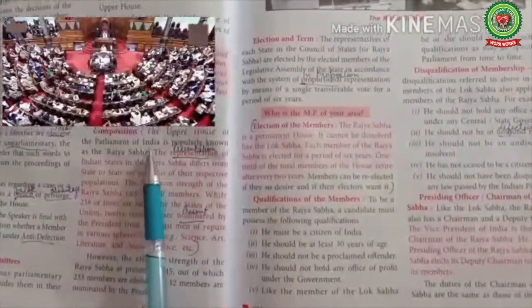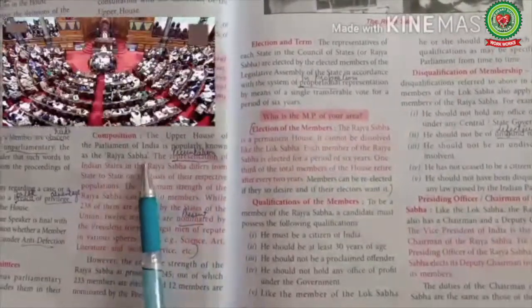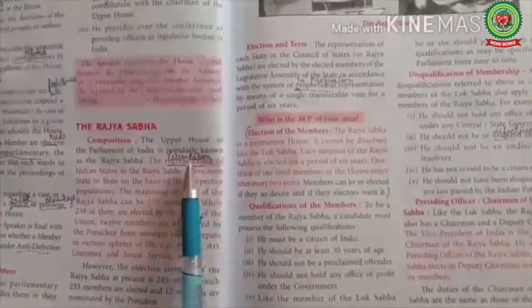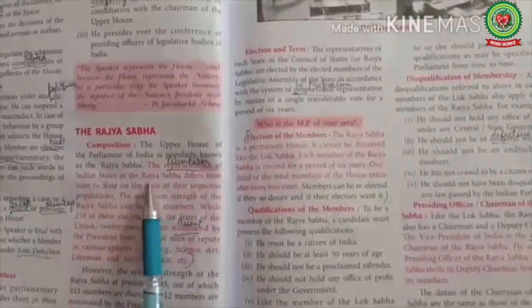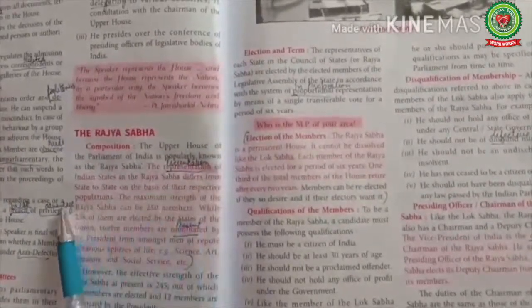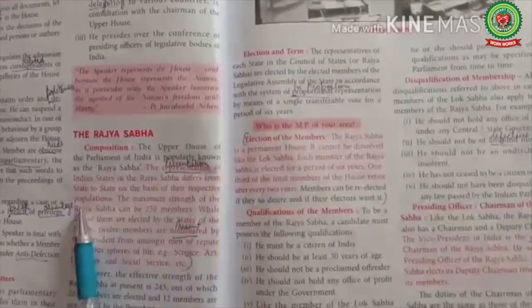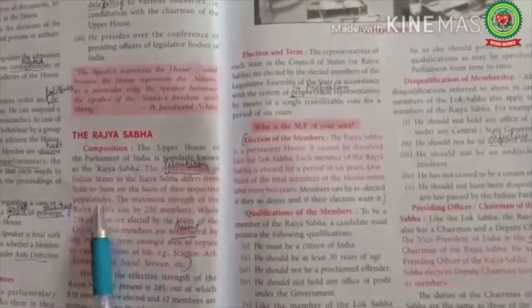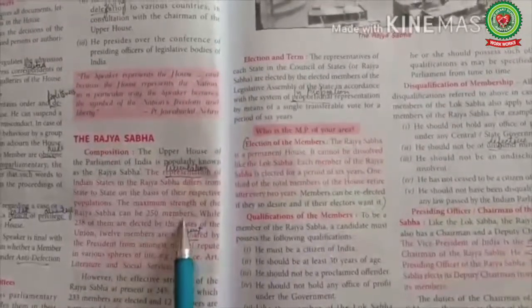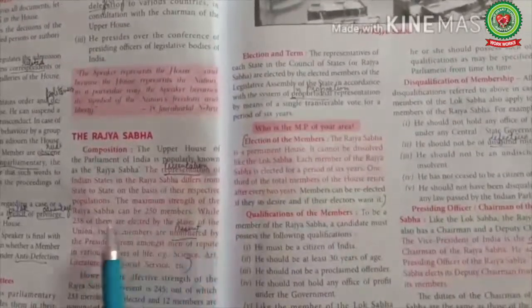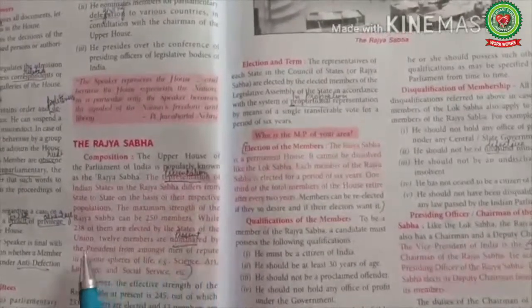The upper house of the Parliament of India is popularly known as the Rajya Sabha. The representation of Indian states in the Rajya Sabha differs from state to state on the basis of their respective populations. The maximum strength of the Rajya Sabha can be 250 members, while 238 of them are elected by the states.